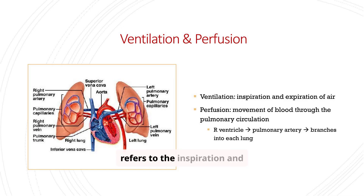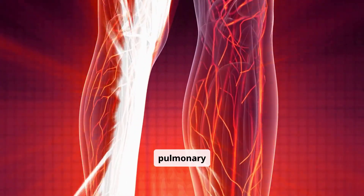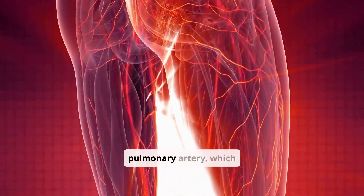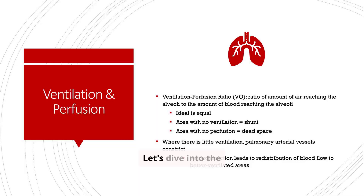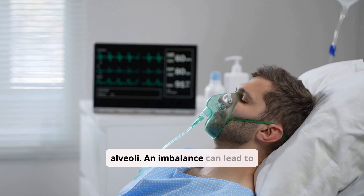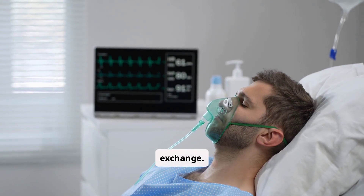Ventilation refers to the inspiration and expiration of air, while perfusion is the movement of blood through the pulmonary circulation. Blood flows from the right ventricle to the pulmonary artery, which then branches into each lung. The ventilation-perfusion ratio, or VQ, represents the balance between air and blood reaching the alveoli. An imbalance can lead to shunting or dead space, impacting gas exchange.